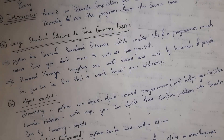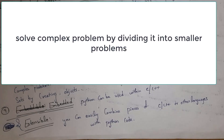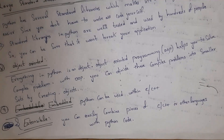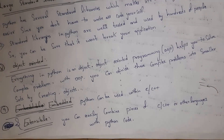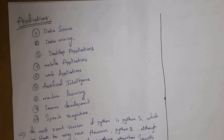The eighth feature is object-oriented — in Python everything is an object. Python supports OOP concepts, which allow you to divide complex problems into smaller ones. The ninth feature is embedded and extensible, meaning you can combine Python programs with other programming languages like C and C++.